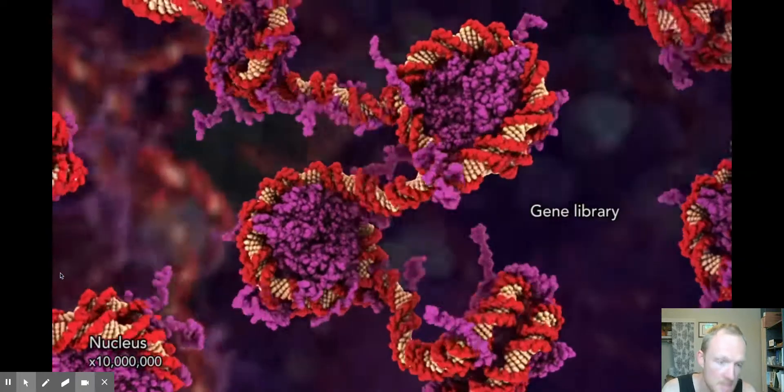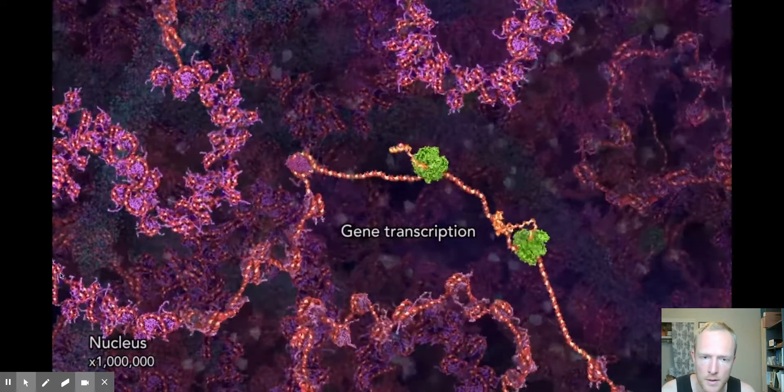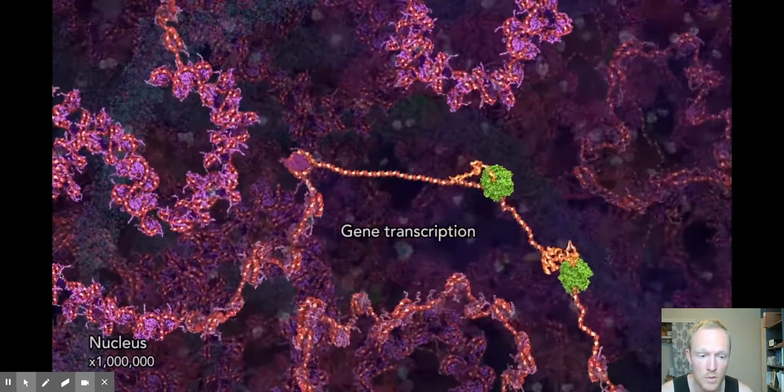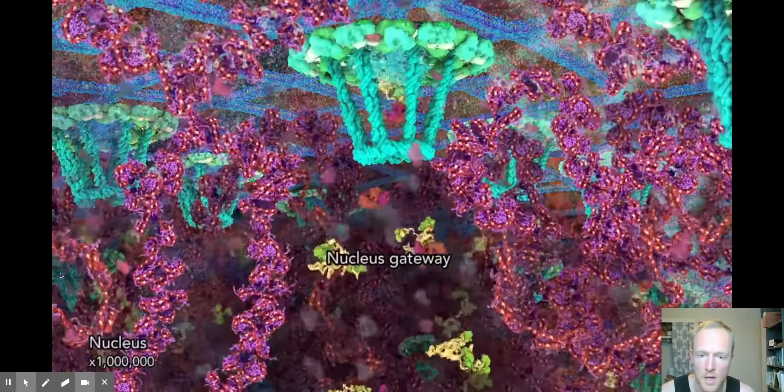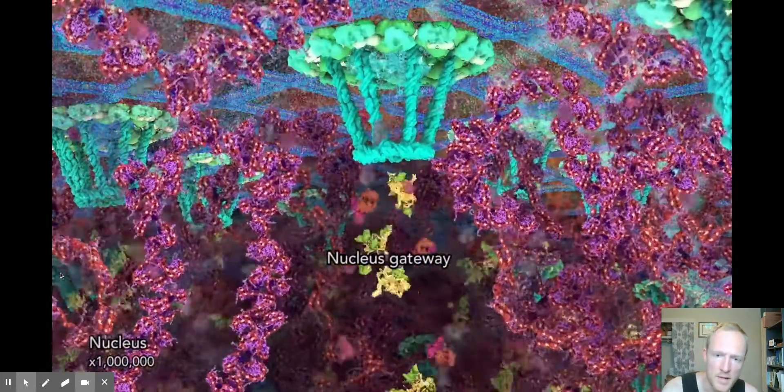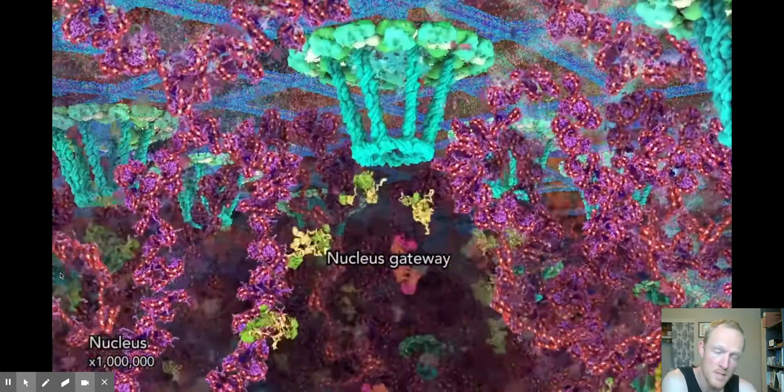Here we see transcription of DNA to make the mRNA which will leave the nucleus and make a protein. You can see those green proteins. This is the mRNA packaged, leaving the nucleus through specialized nuclear pores. Now the nucleus is separate within its own membrane, separate within the cell.